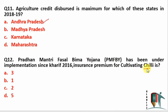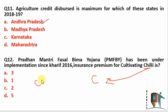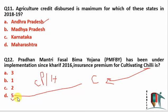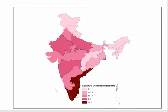Pradhan Mantri Fasal Bima Yojana: what is the insurance premium for chili? The question is slightly twisted — chili is a cash crop, and cash crops, commercial plantation crops, and horticulture crops all have a premium of around 5 percent. So wherever you find cash crops or horticulture crops, the premium is around 5 percent. The answer here is 5 percent.